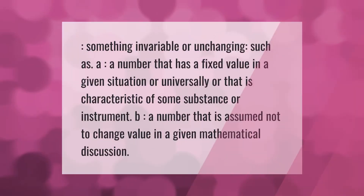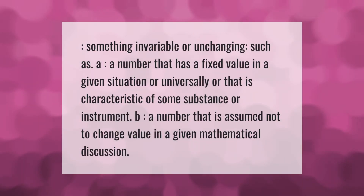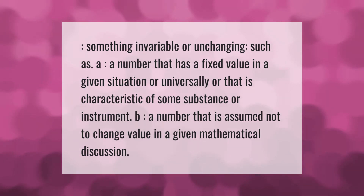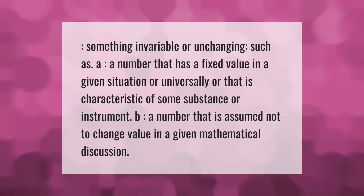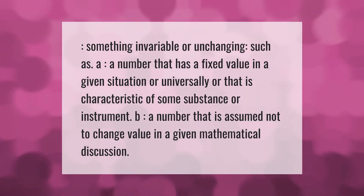A constant is something invariable or unchanging, such as: (a) a number that has a fixed value in a given situation or universally, or that is characteristic of some substance or instrument; (b) a number that is assumed not to change value in a given mathematical discussion.